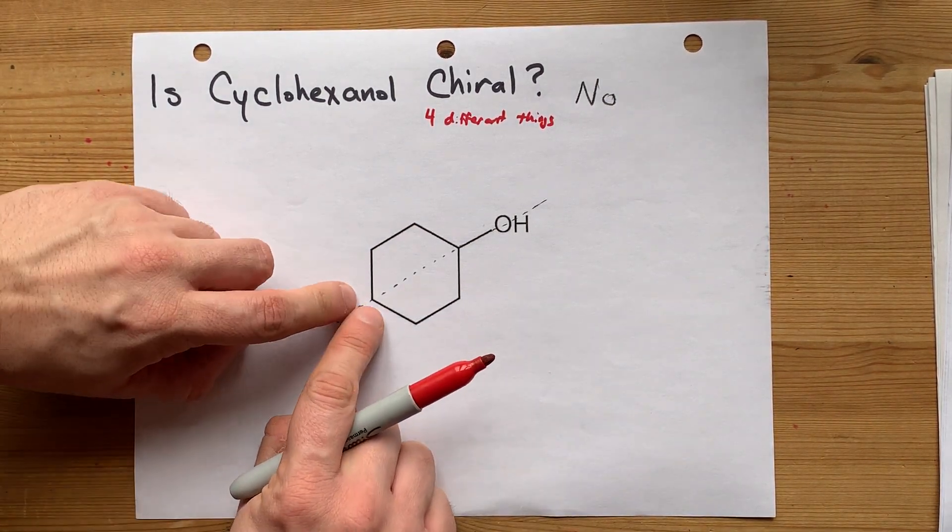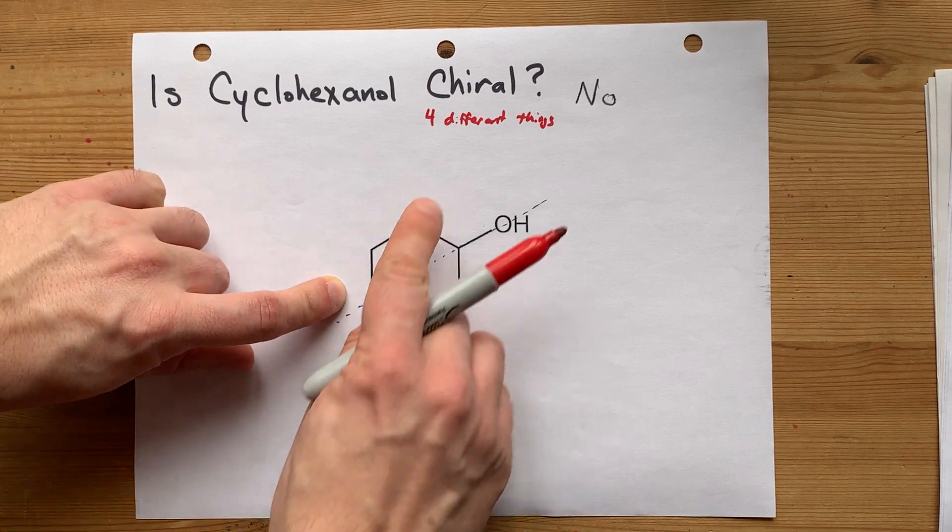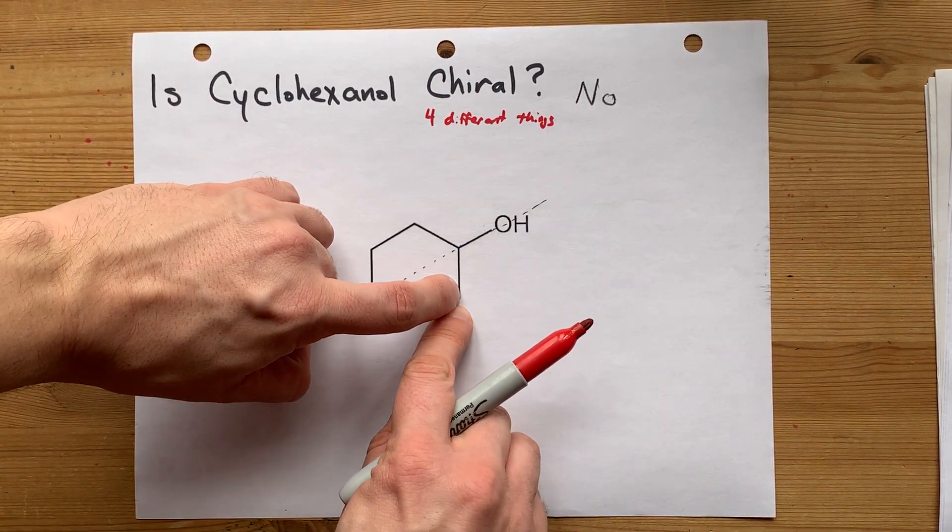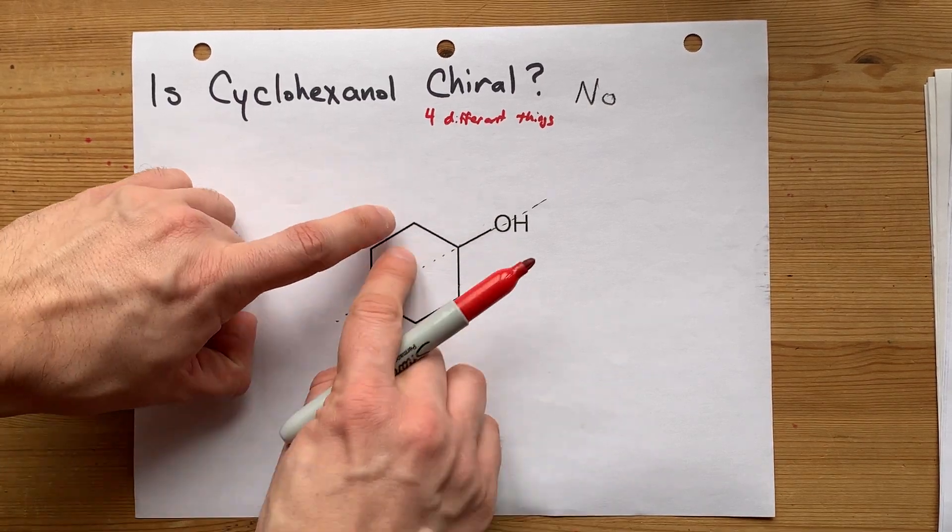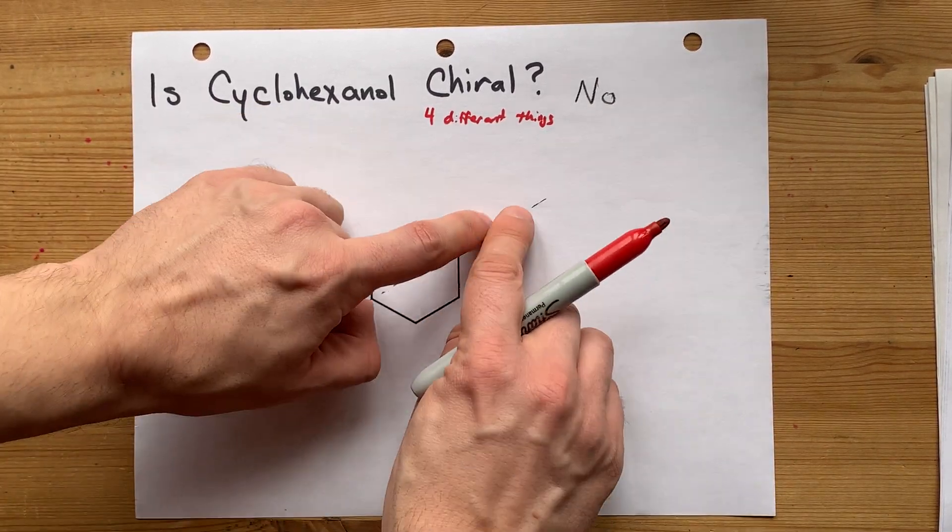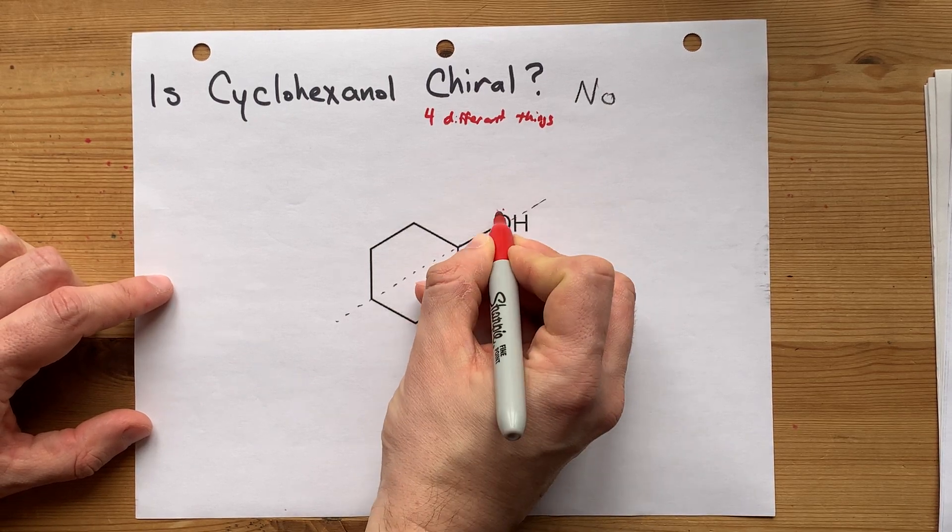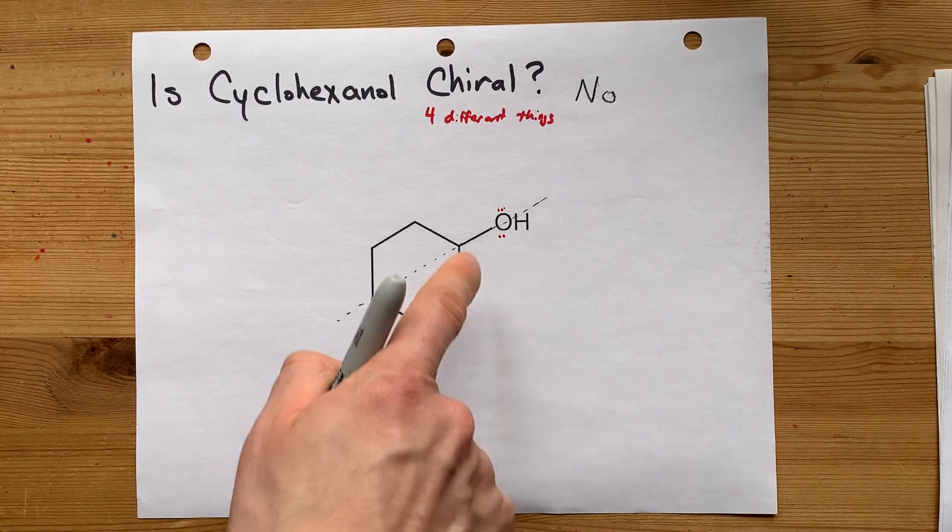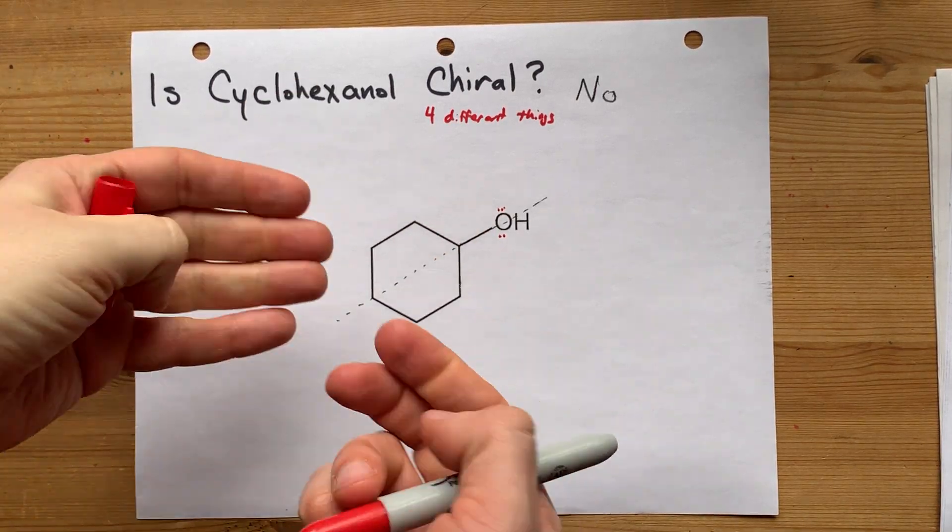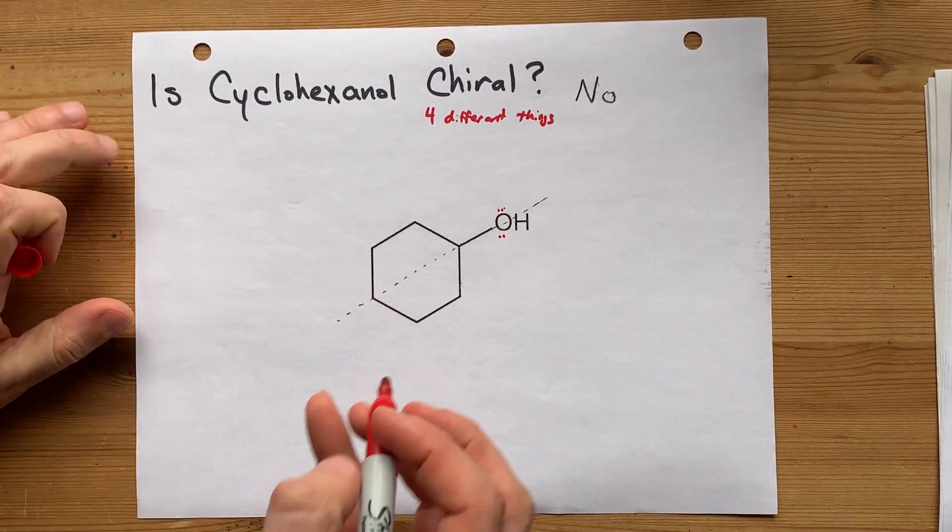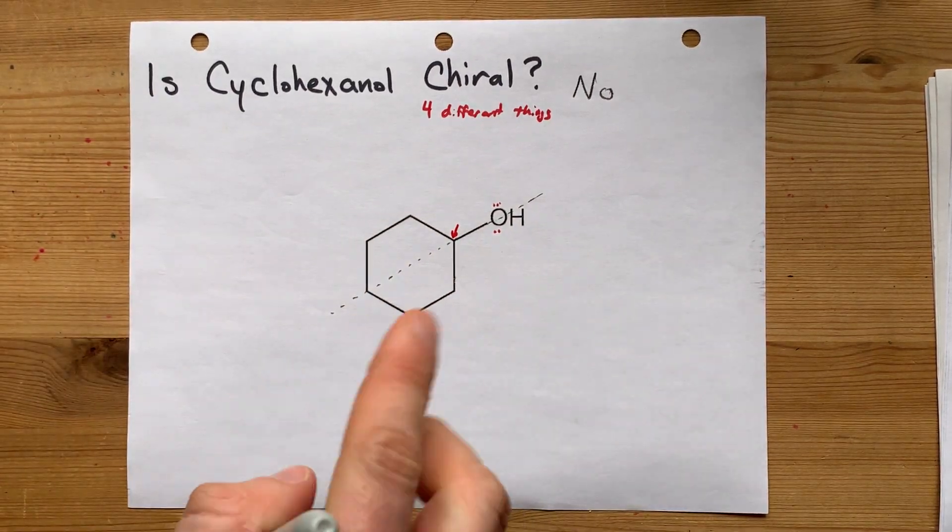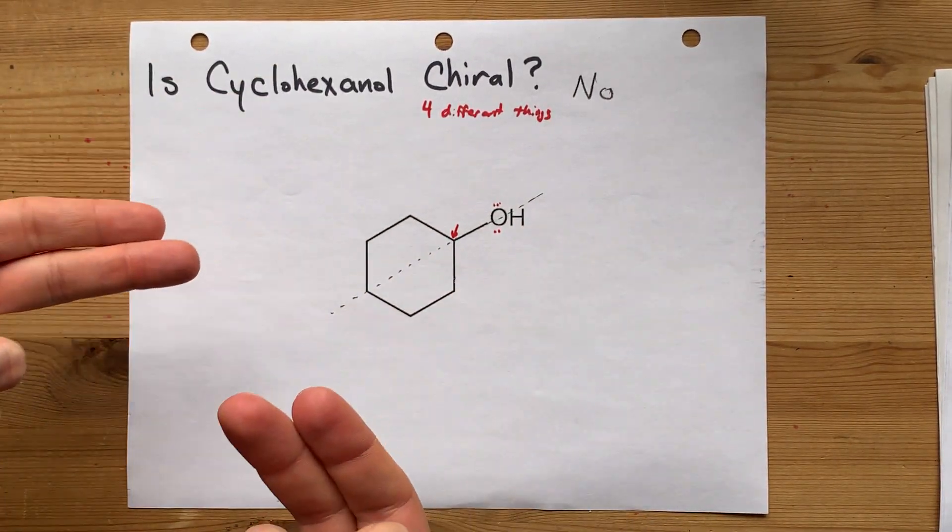Now this carbon has two hydrogens on it, so that's not four different things. This carbon has two hydrogens, this carbon has two hydrogens, this carbon has two hydrogens, this carbon has two hydrogens. This oxygen, by the way, has two lone pairs, so even if you were going to consider chirality around the oxygen, the two lone pairs are the same thing, so it's not four different things. This is the only carbon that might make you think that there's four different things attached to it.